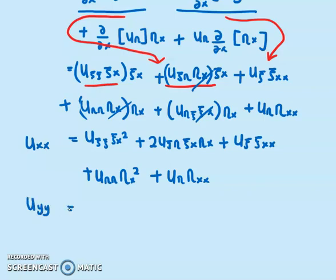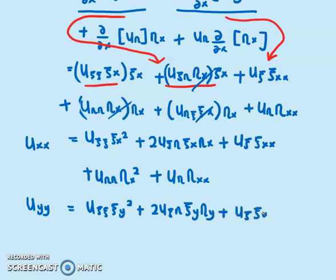To find U_yy, I can manipulate the U_xx expression by replacing every X with Y. So we get U_yy = U_ψψ·ψ_y² + 2·U_ψη·ψ_y·η_y + U_ψ·ψ_yy + U_ηη·η_y².